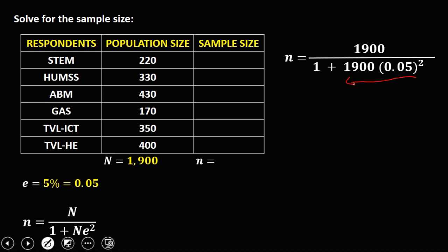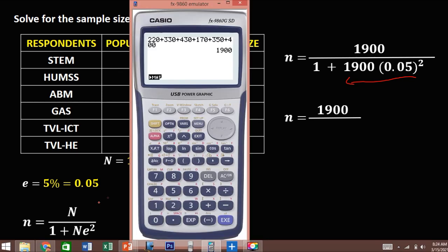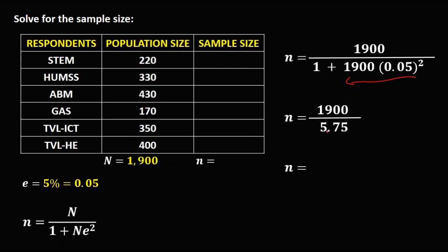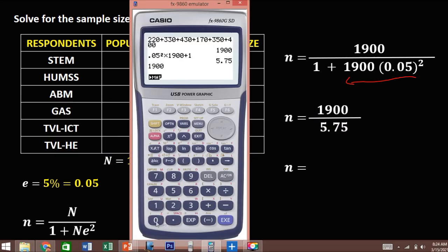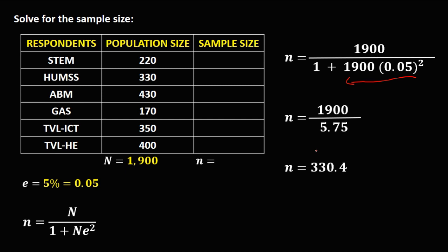Solving this equation from right to left: 0.05 squared times 1900 plus 1 gives 5.75. So the sample size is 1900 divided by 5.75, which equals 330.4. Since the sample size must be a whole number, the final answer is 330. This is the total sample size.